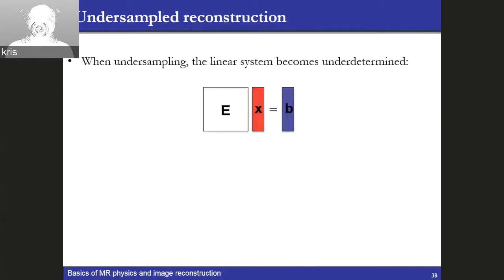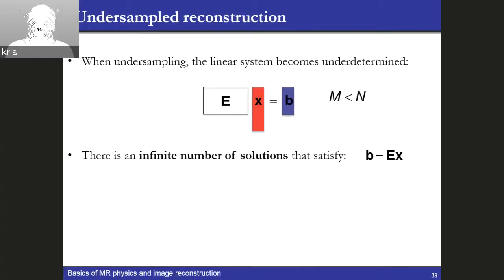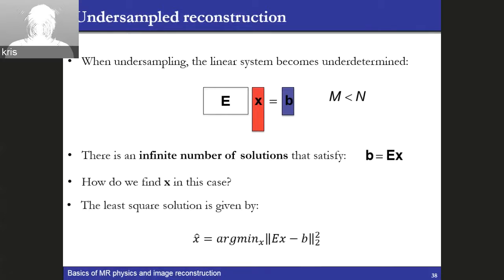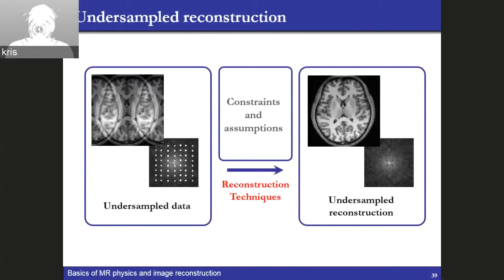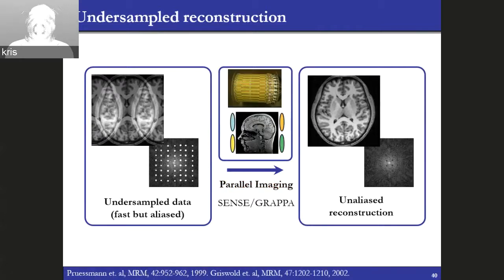Going back to formulating the reconstruction as a linear inverse problem, when we undersample we have fewer equations than variables — an underdetermined system. Even the least squares solution will give us the aliased image, because we do not have enough information to reconstruct the fully sampled non-aliased image. To do this, we need some extra information, some extra constraints or assumptions. One of the most commonly used approaches nowadays is parallel imaging, which we'll go through in the last part of this talk.